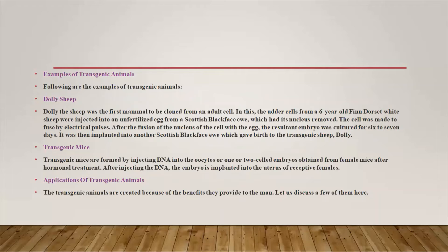An example of a transgenic animal is Dolly the sheep. Dolly was the first mammal to be cloned from an adult cell. Cells from a six-year-old Finn Dorset white sheep were injected into an unfertilized egg from a Scottish Blackface ewe, which had its nucleus removed. The cell was fused using electrical pulses called electroporation, and the resultant embryo was cultured for six to seven days, then implanted into another Scottish Blackface ewe, which gave birth to the transgenic sheep called Dolly.